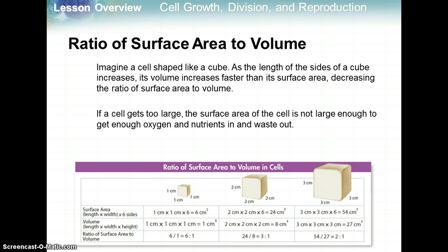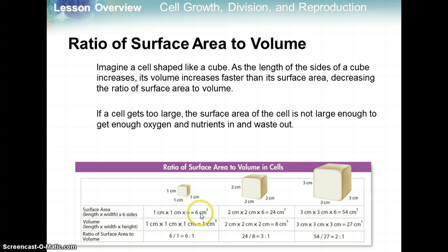Imagine a cell shaped like a cube, because it's easy to calculate surface area and volume with a cube. As the length of the sides of a cube increases, its volume increases faster than its surface area, decreasing the ratio of surface area to volume. If a cell gets too large, the surface area is not large enough to get enough oxygen, nutrients, and waste in and out. For example, a small cube with 1 centimeter sides: surface area is 1 times 1 times 6 sides equals 6 centimeters squared; volume is 1 centimeter cubed. The surface area to volume ratio is 6 to 1.